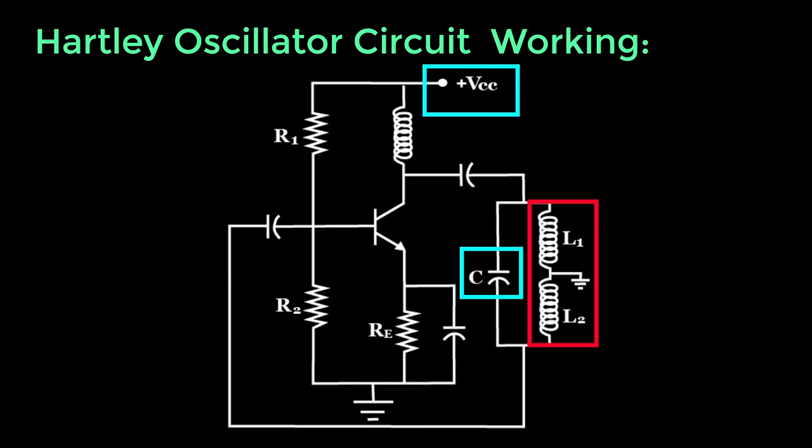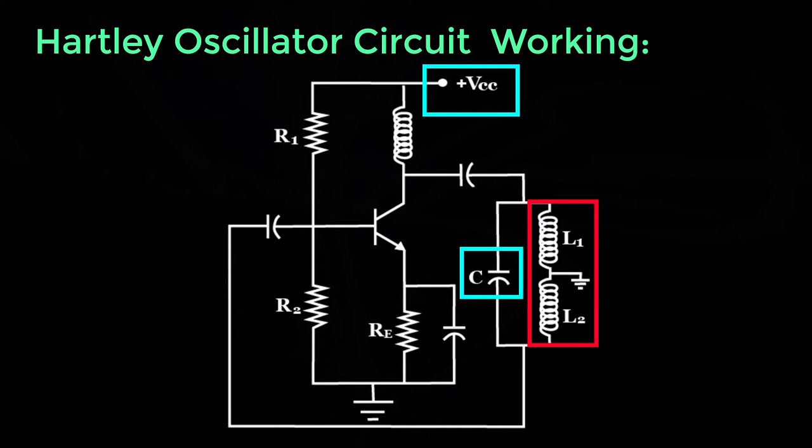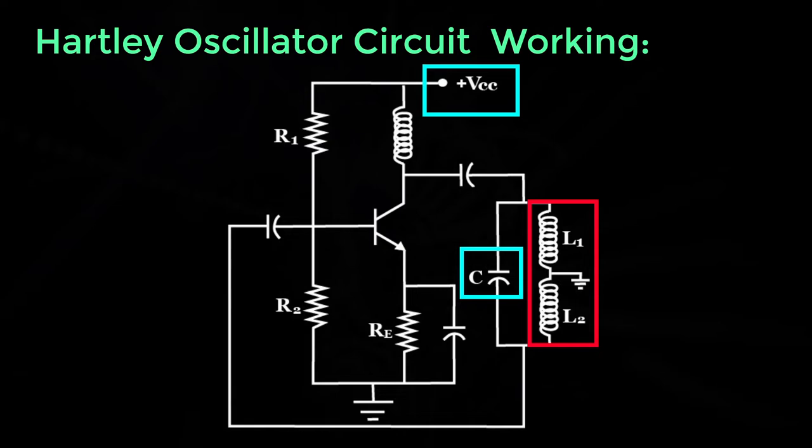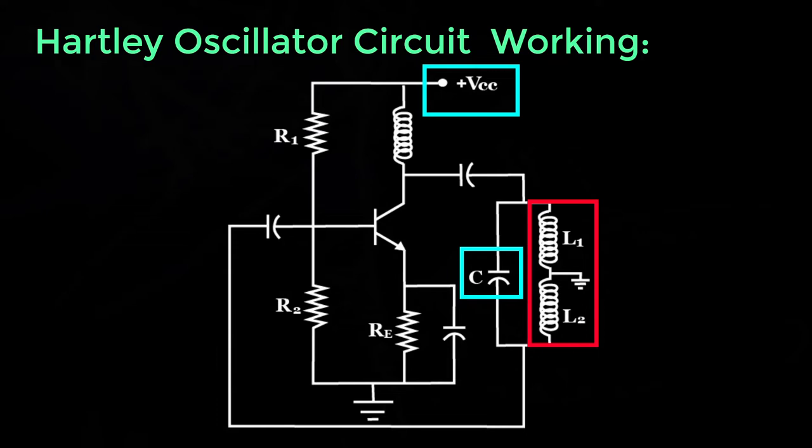Once capacitor C is fully charged, it starts discharging through L1 and L2 and again starts charging. This back and forth voltage waveform is a sine wave which is small and leads with its negative alteration. It will eventually die out unless it is amplified.